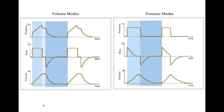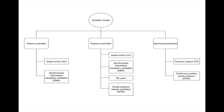These are what are called scalars — different properties like pressure, flow, or volume graphed against time, with very classic-appearing patterns when you look at volume modes versus pressure modes. The most easily recognizable is the pressure scalar, where you see a peaked-type tracing for volume modes versus a square-type tracing for pressure modes.